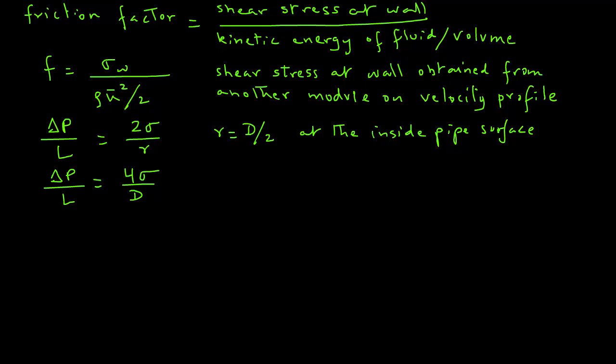We can rearrange these terms. So we have sigma equals delta p D divided by 4L. And then we can substitute this sigma, which is shear stress, in our earlier expression for the friction factor, and get F equals delta p D times 2 divided by 4L rho u bar squared. Then, we can further simplify that as F equals delta p D divided by 2L rho u bar squared.